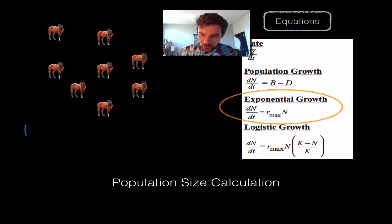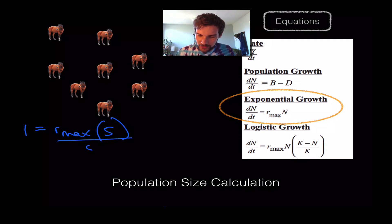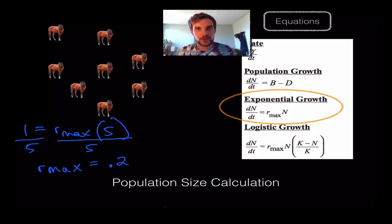Now for exponential growth: we know dN/dt = 1, we want to find r_max, and our original population N was five. So 1 = r_max × 5. Dividing both sides by five, r_max = 0.2 — that's the rate of growth.